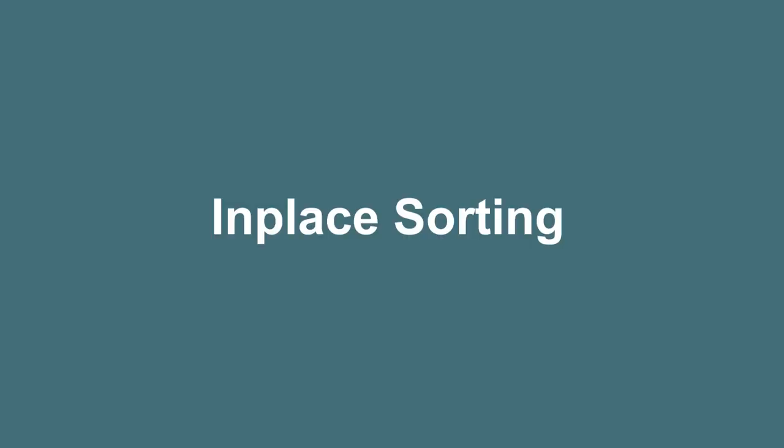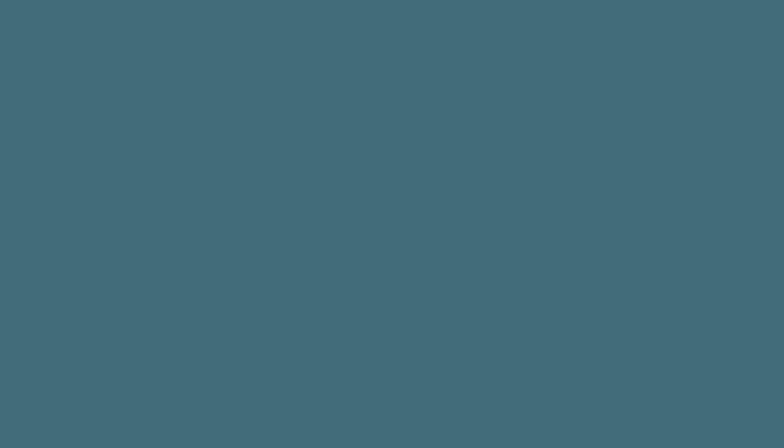Before diving further, I want to introduce two terms. First is in-place sorting algorithms, and then we have stable sorting algorithms. In-place sorting algorithms are the algorithms which do not use any extra space while performing the algorithm. Out-of-place algorithms actually tend to use some extra memory other than the input that you have provided.